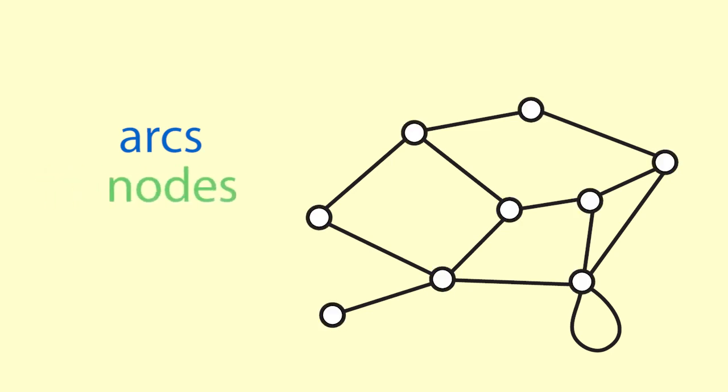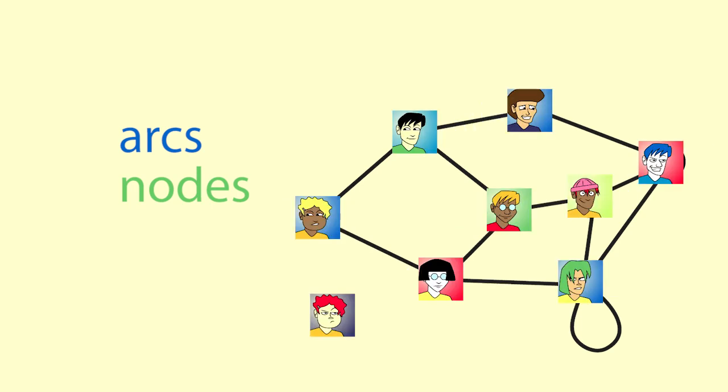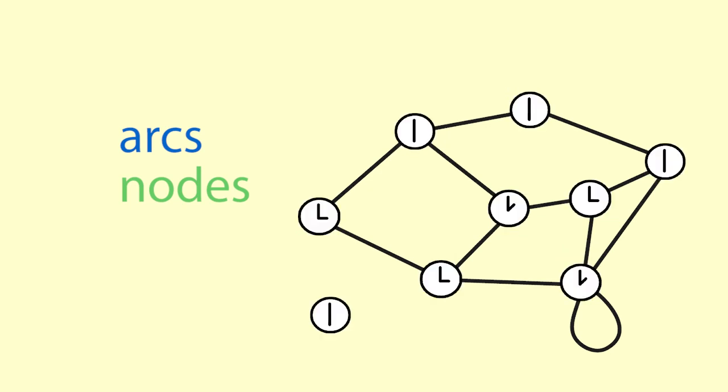Similarly, nodes can represent physical locations such as bus stops or towns. Nodes can also represent other things like people, businesses or points in time.